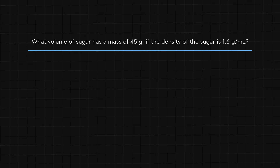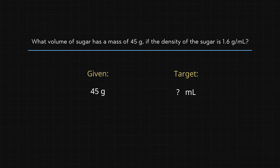We have a proportional relationship and if we pay attention to units, we can easily solve computational problems like this one. What volume of sugar has a mass of 45 grams, given that the density of sugar is 1.6 grams per milliliter? We start with the given quantity — the grams of sugar — and then consider the units of our answer. We want volume, so we need to have milliliters at the end. We know there is a proportional relationship between mass and volume, and that includes density, so we use the density to get from our given to our target.